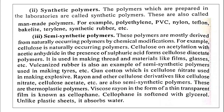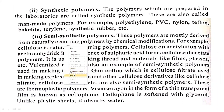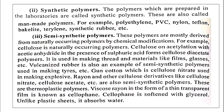Synthetic polymers are prepared in laboratories or industries, and are also called man-made polymers. For example, polyethylene is a synthetic polymer obtained from ethylene. Other examples include polyvinyl chloride, nylon, teflon, bakelite, terylene, and synthetic rubber.